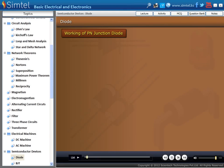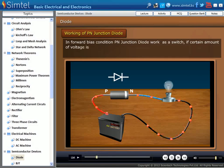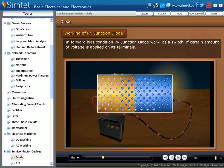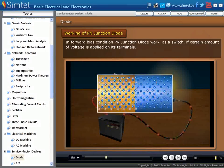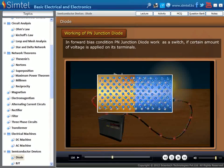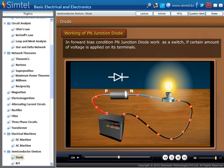Here we show the working of P-N junction diode. If a diode is connected in a forward bias condition between a battery and a bulb, then in this configuration the diode works as a closed switch, and current flows from battery to bulb. Due to this, bulb glows.